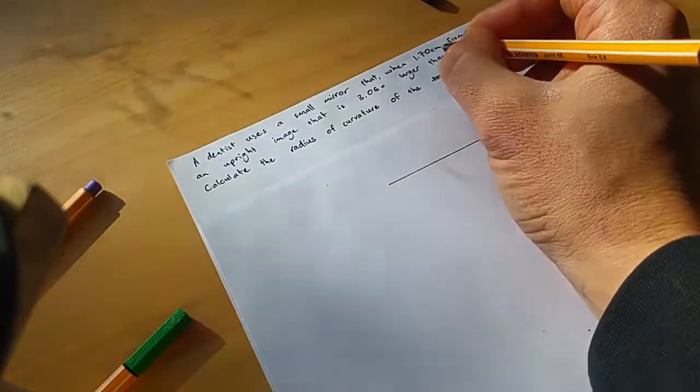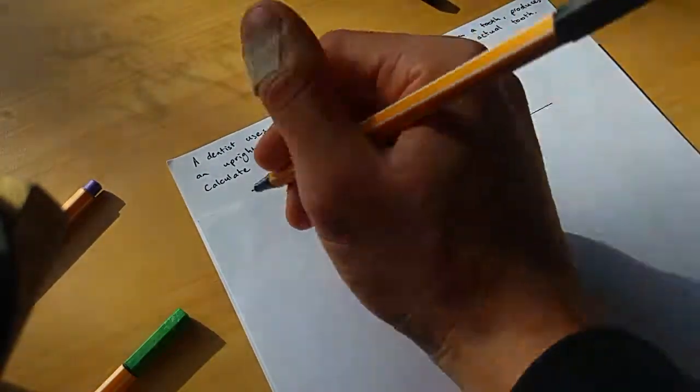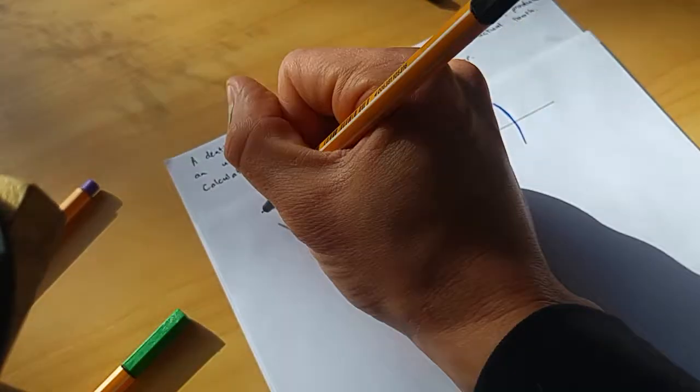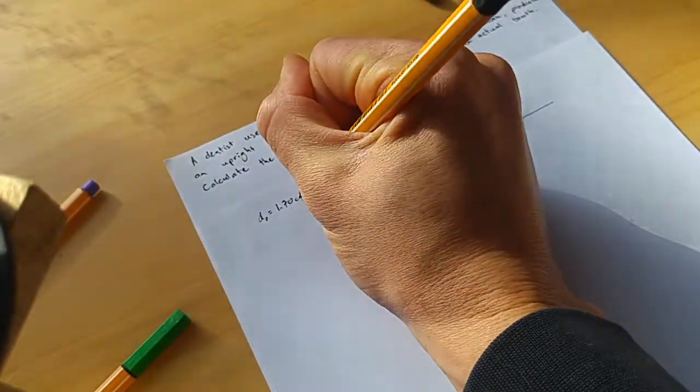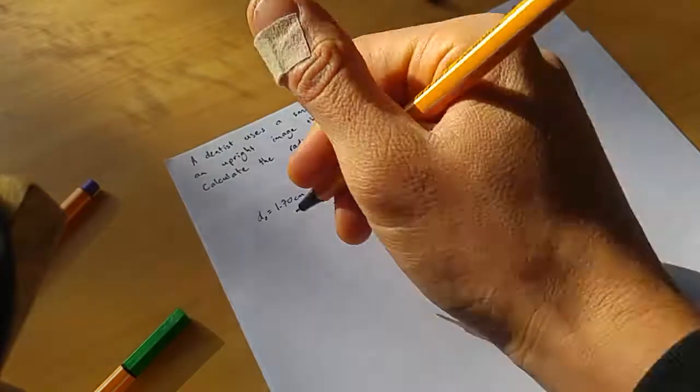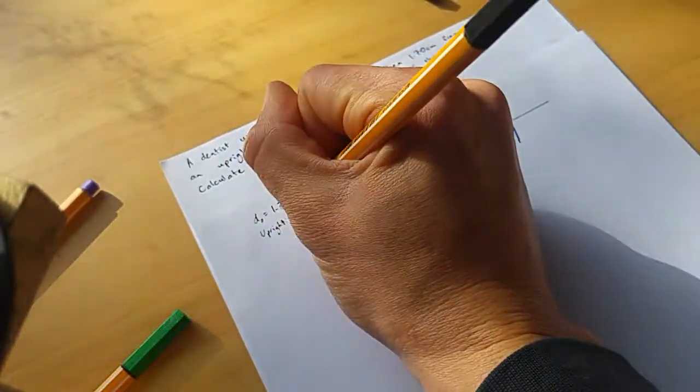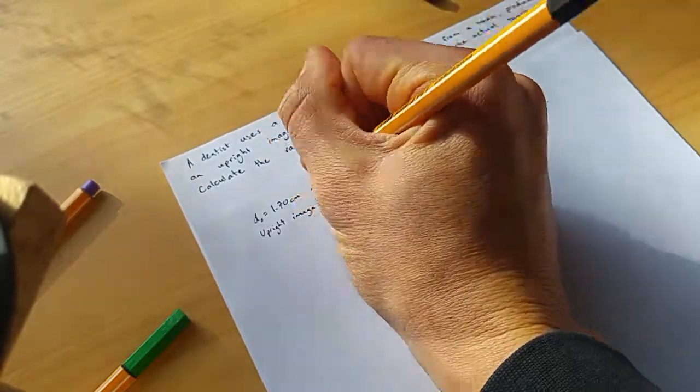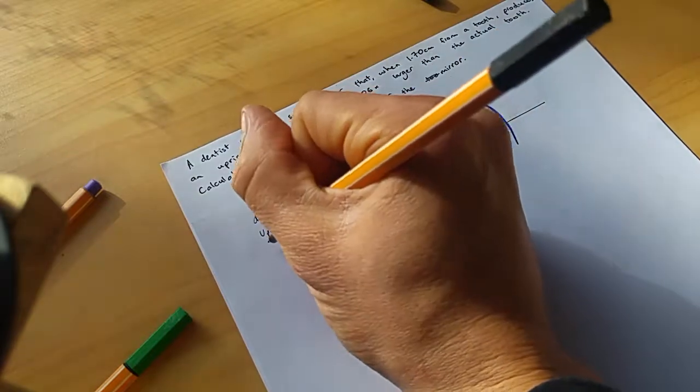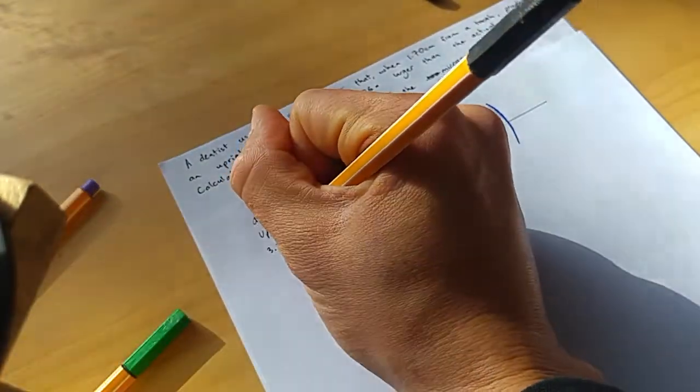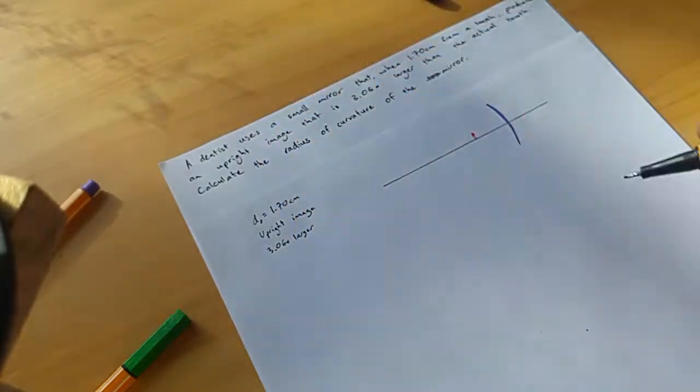So what information do we know? We know that the tooth is 1.7 centimeters from the mirror, so I'll call that the distance of the object. DO equals 1.70 centimeters. I also know it's an upright image. And I know that the image is 3.06 times larger than the tooth, than the object.